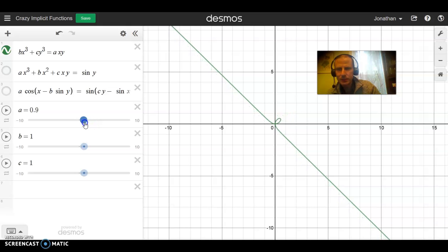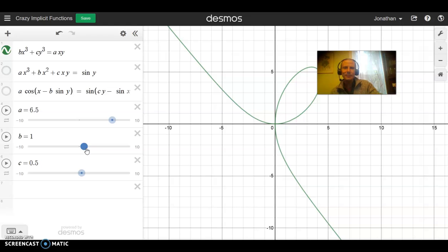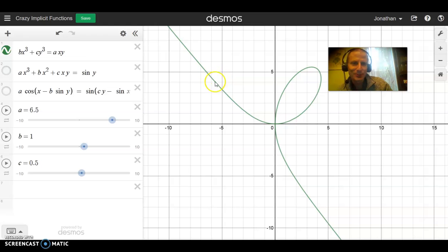However, by moving these sliders, we can see what happens as you allow these to change. So for example, making a get bigger makes the loop bigger, which I enjoy. Making b get bigger does all sorts of funky things. Making c get bigger kind of does the same thing as b getting bigger. So that's all pretty fun. And then you kind of ask, well, what are some other crazy functions we can define implicitly? And like when I was a kid, we only could have graphs where y was a function of x, we couldn't have all these implicitly defined functions. And now, thanks to programs like Desmos, you can.